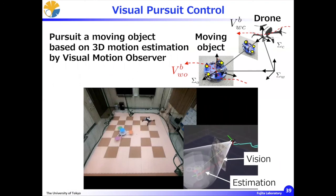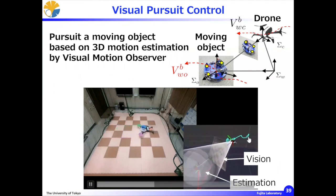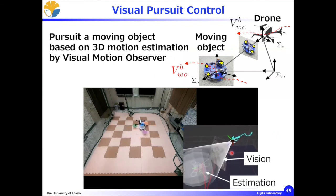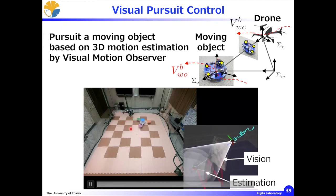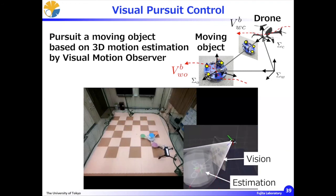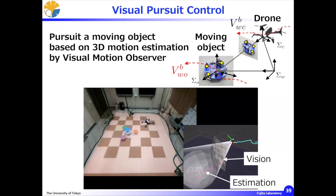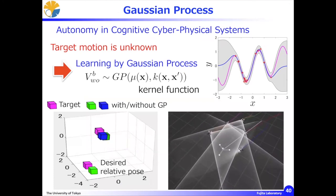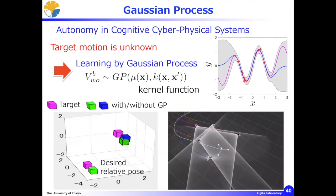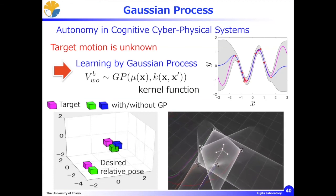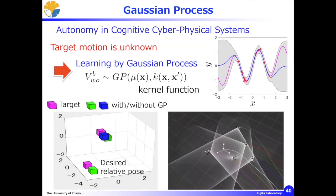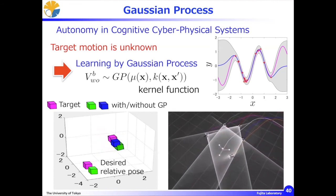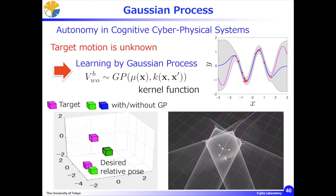There is one thing I would like to add: visual pursuit control. This is to pursue a moving object based on 3D motion estimation by the visual motion observer. This is the drone and this is the moving object — the evader. Apparently, if we want to achieve better pursuit, we need to learn the evader's behavior. To learn the target motion, we currently make use of a machine learning technique — more precisely, Gaussian process. By integrating machine learning techniques and passivity-based control, autonomy in cognitive cyber-physical systems can be realized.